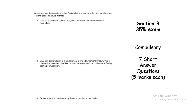Section B of the exam is seven short answer questions. For example: give an overview of pattern recognition receptors, including several examples. There will be a word limit of around 100 to 150 words. The key to providing a good answer for this section is your ability to convey immunological information in a concise manner. The exam preparation tutorial will help you prepare effectively and give you an idea of what level of material is required. Section B is worth 35% of the exam.